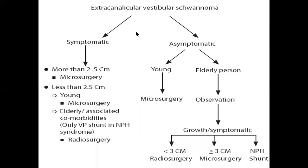For extracanalicular vestibular schwannoma: if symptomatic and more than 2.5 centimetres — for young patients, go for microsurgery; for elderly with comorbidities, go for radiosurgery. If less than 2.5 centimetres and young, microsurgery; if asymptomatic and elderly, observation. If growth and symptomatic: less than 3 centimetres — radiosurgery; more than 3 centimetres — microsurgery, with shunt if needed.